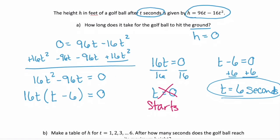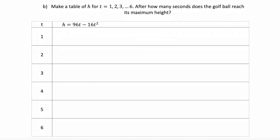Now part b is asking us to make a table for the six different values of time, 1 through 6. And to do that, we just substitute the value in for t. So 96 times 1 minus 16 times 1 squared equals 96 minus 16 or equals 80. Remember this is height, so all of these will be in feet.